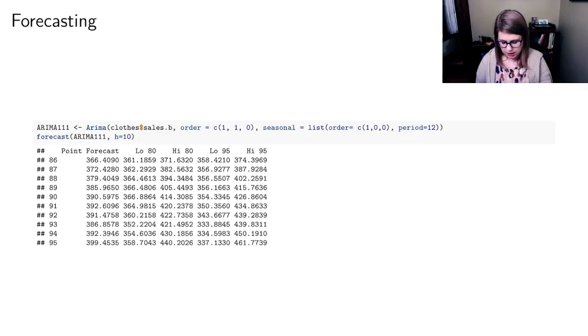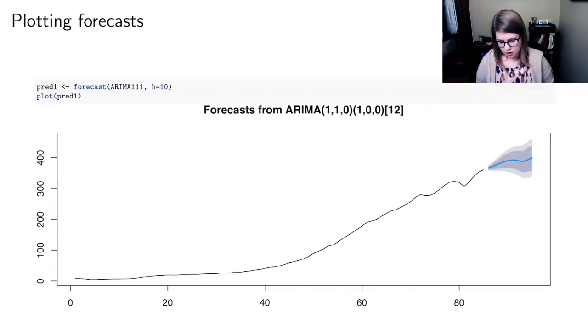So you never want to just look at the point forecast. You want to look at one of these intervals. And you can also save those forecasts as an object and you can plot that object in R. And R has a plot method which will automatically make a plot of the data. So it'll be all the real data from your model. And then it will plot the point estimate as the middle line here.